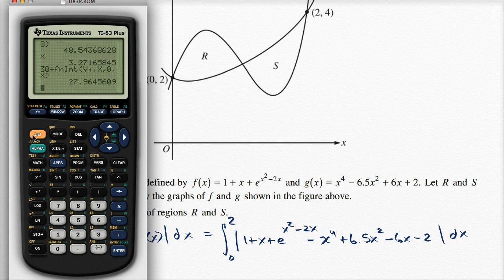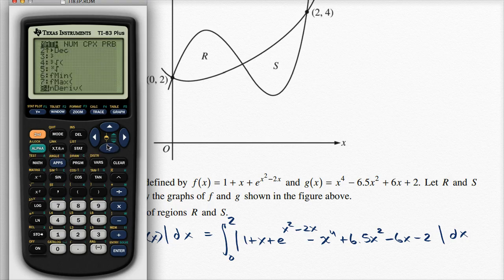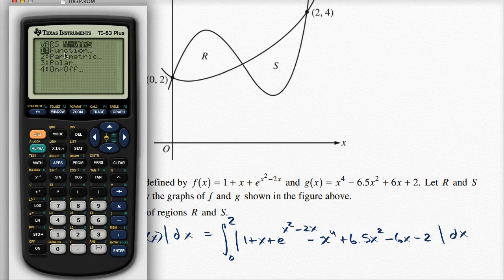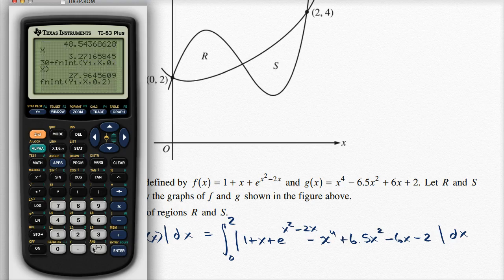And so now let's evaluate this definite integral. So we go to math, and then we scroll down to definite function integral, so click on that, and we're going to use y1. So we go to variables, we go to the right to y variables—it's a function variable that we just defined—and so we select y1. Our variable of integration is x, and our bounds of integration, we're going to go from x = 0 to x = 2, so we go from 0 to 2, and then we let the calculator munch on it a little bit.